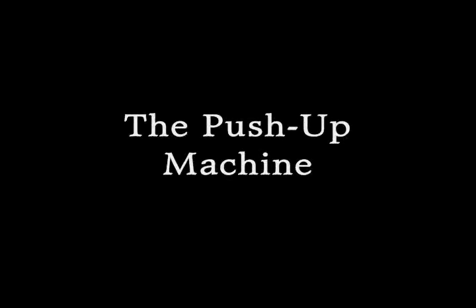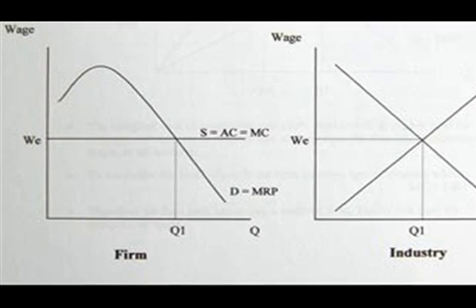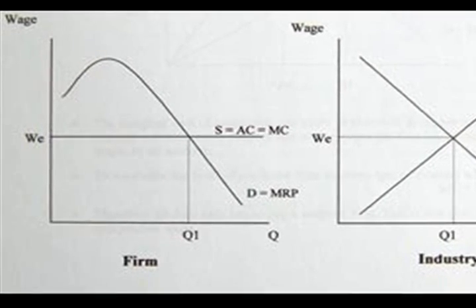This is a fun and exciting activity that shows the relationship between the law of diminishing marginal returns and marginal revenue product. Most importantly, it explains the graph for a firm hiring in a perfectly competitive labor market.